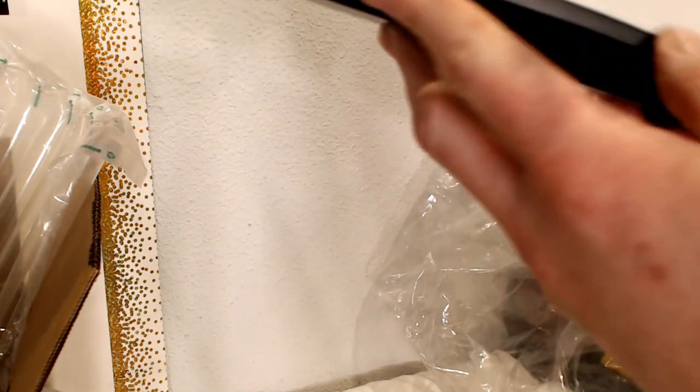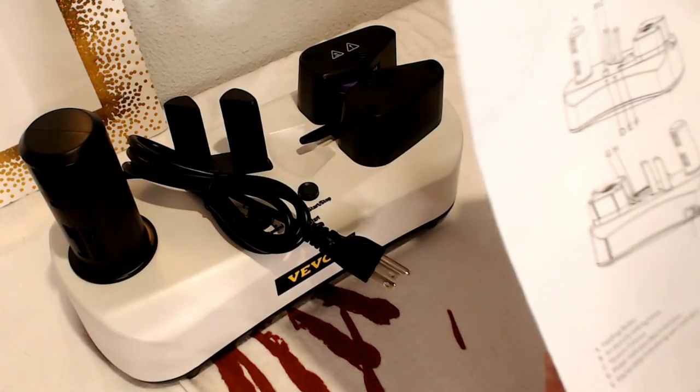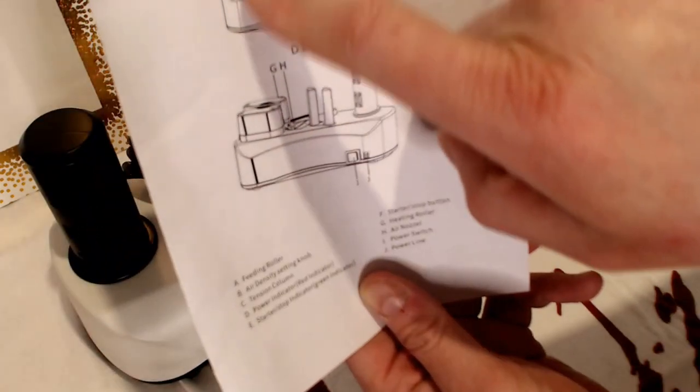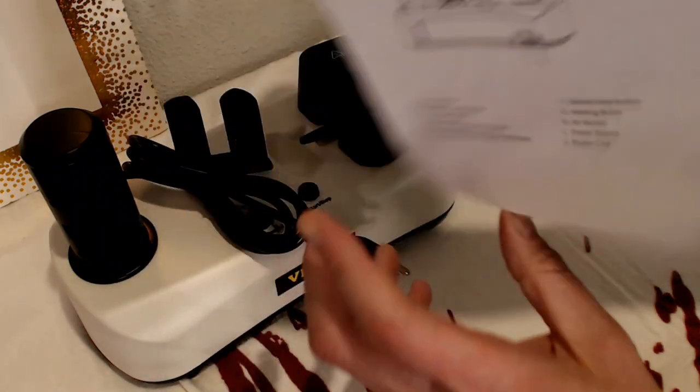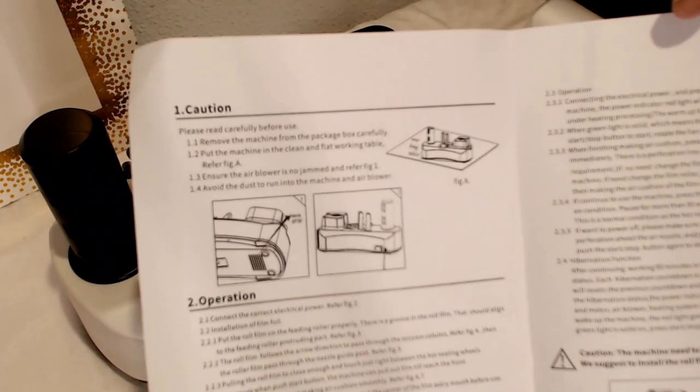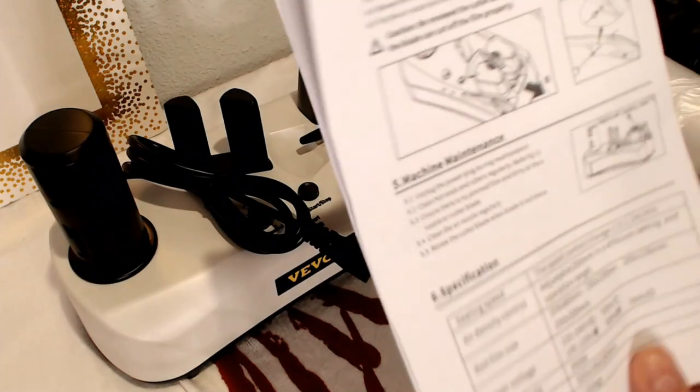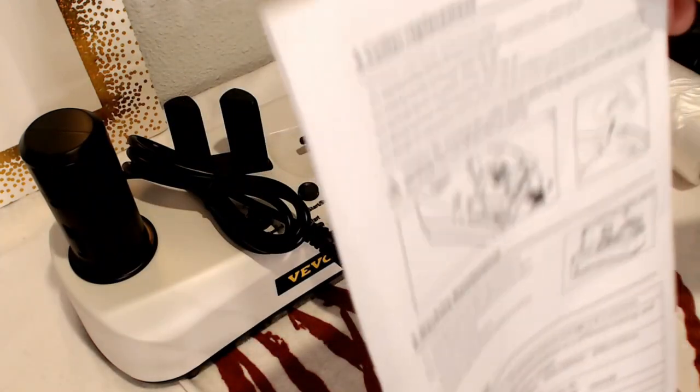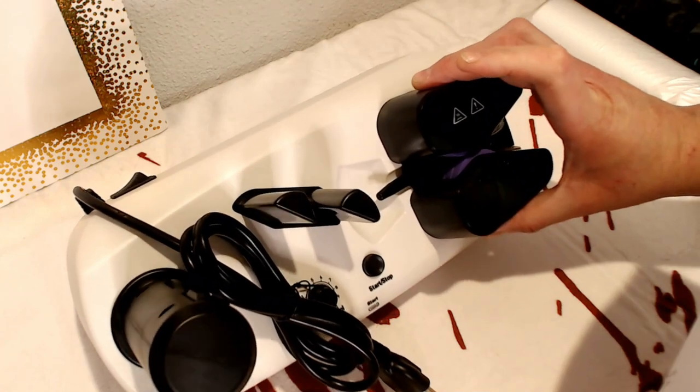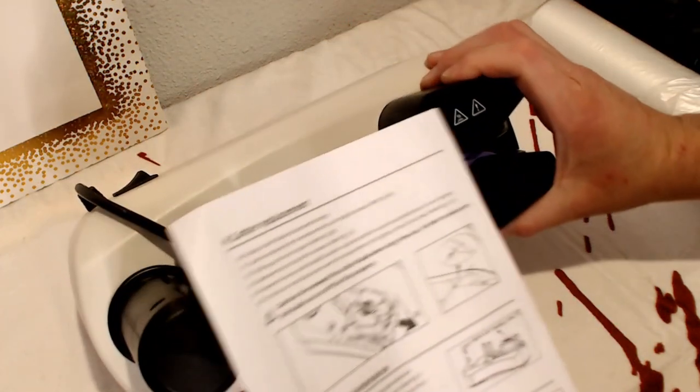Before we get started, I wanted to show you a little bit about the manual. You can see that's where you put the bubbles in. You can basically read it if you want to pause. Again, I'll link this down below so you can check it out yourself. The only thing you have to do is I believe every six months, or after a whole bunch of bubbles, you have to replace the blade. There's a cutting mechanism or knife in here somewhere. The blade cuts the film.